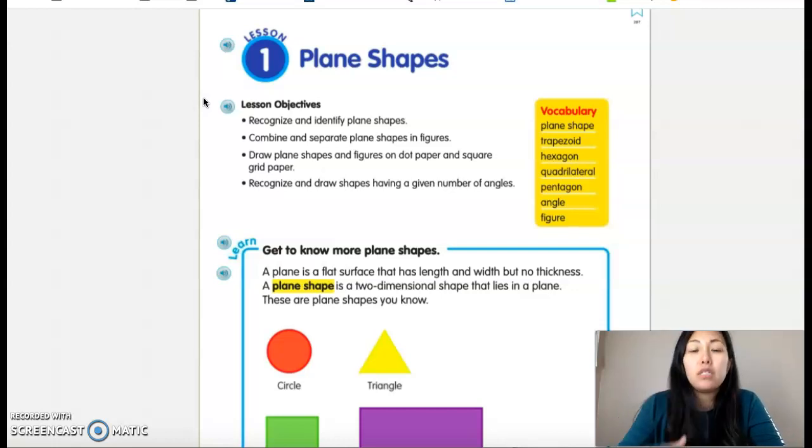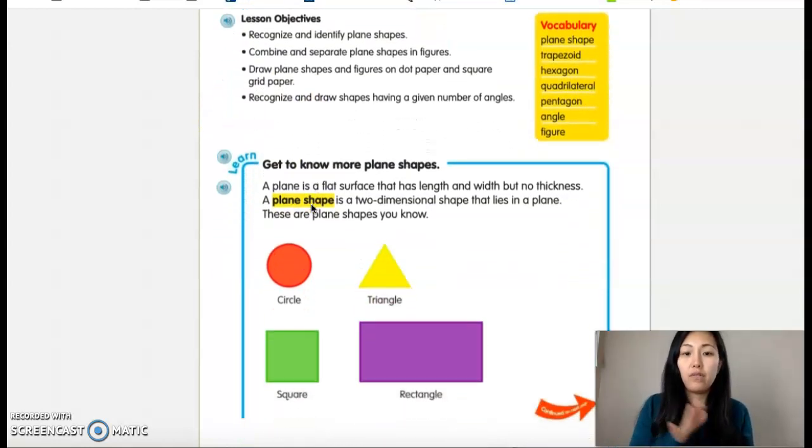Last time you worked on solid shapes, and remember a solid shape is something that you can hold physically in your hand. It's something that you are able to touch and it is a 3D shape. Today we're going to be focusing on plane shapes. Now plane shapes are flat and have length and width but no thickness.